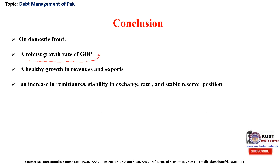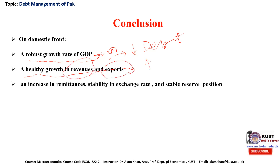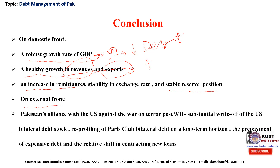To overcome these challenges, on the internal front, a robust growth rate of GDP is needed — if GDP increases, we can overcome or reduce the debt burden. A healthy growth in revenue and exports is also required; if revenue, tax collection, and exports increase, it will improve the performance of the Pakistan economy. Additionally, an increase in remittances, stability in the exchange rate, and a stable reserve position are important measures.